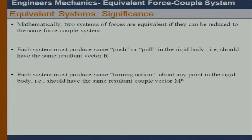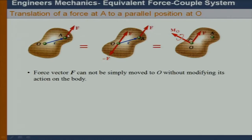The main point here is that if we look at two force systems, they must produce the same push or pull in physical terms on the rigid body. That means they should have the same resultant force R. Each system must also produce the same turning action about any point in the rigid body — that is, they should have the same resultant moment couple vector M_R.